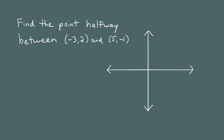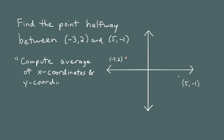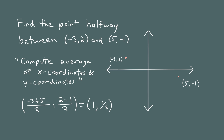Let's find the point halfway between (-3, 2) and (5, -1). Like before, I'll draw where these two points are approximately. We're finding the point halfway between these two — that's just another way of describing the midpoint. We compute the average of the x-coordinates: negative 3 plus 5 divided by 2. Then the y-coordinates: 2 minus 1 divided by 2. Simplifying, we get an x-coordinate of 1 and a y-coordinate of 1 half. That looks about right on the plane, so the midpoint is (1, 1/2).